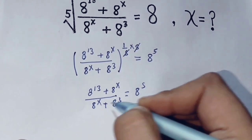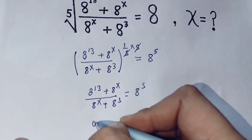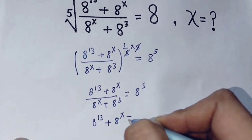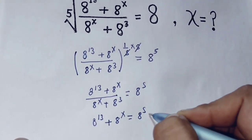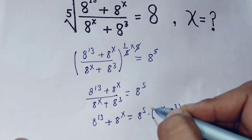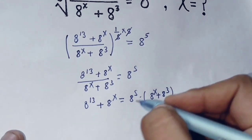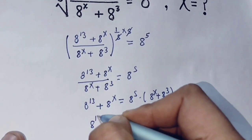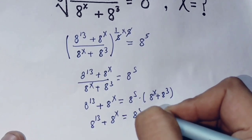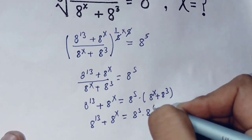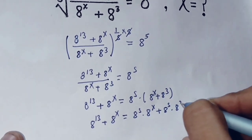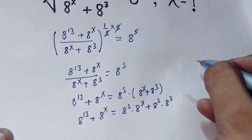Take the denominator to the right side: 8 power 13 plus 8 power x equals 8 power 5 times (8 power x plus 8 power 3). Distributing 8 power 5 gives: 8 power 13 plus 8 power x equals 8 power 5 times 8 power x plus 8 power 5 times 8 power 3.